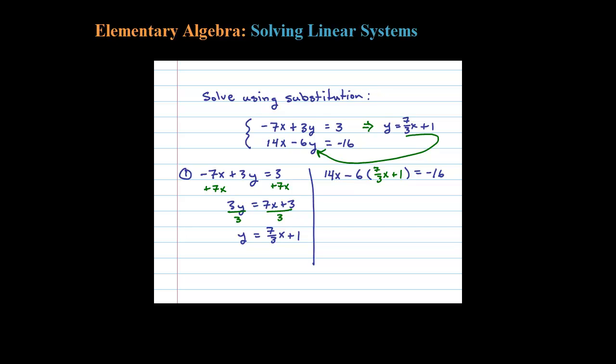So now the only variable left is x. Let's do the math. So 14x minus, well 3 goes into 6 twice and then 2 times 7 is 14, 14x negative 6 times the 1 is negative 6.